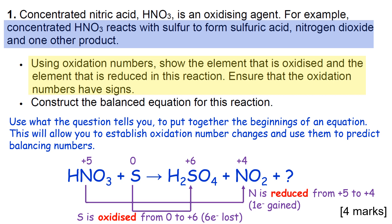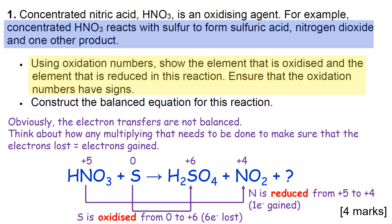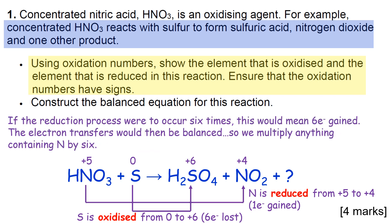The problem we have is that the electron transfers don't balance - one electron being gained can't be supporting six electrons being lost and vice versa. So you need to multiply one of them up so that both sides have six electrons being transferred, not just one.